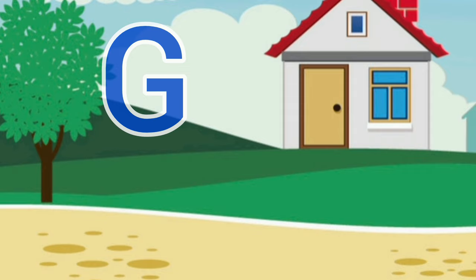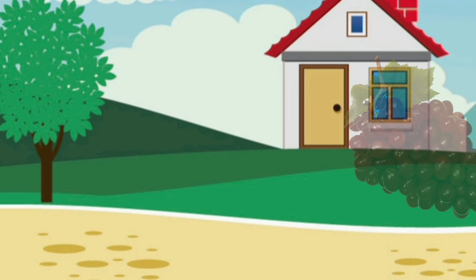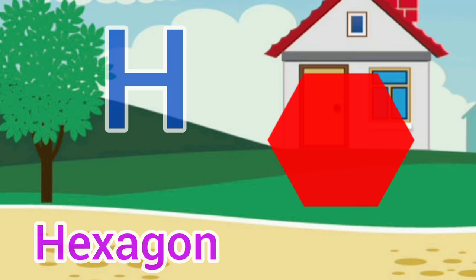G for grapes, grapes means anggur. H for hexagon, hexagon means sashtabhuj.